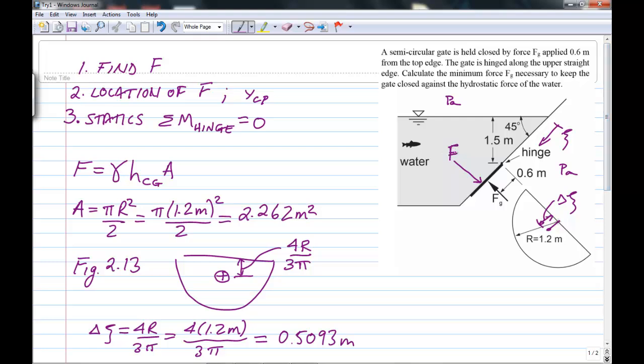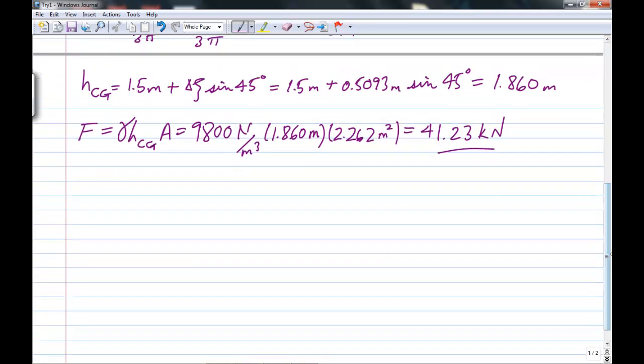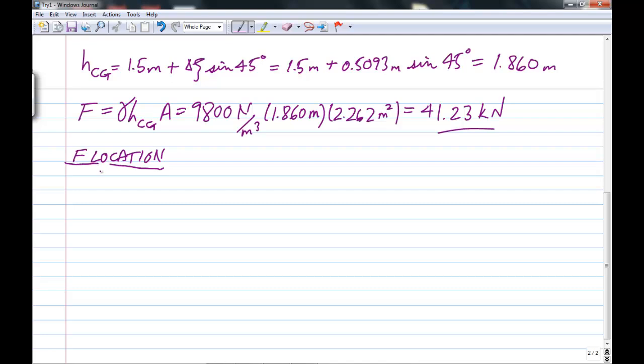That's this force F here. And now we need to find its location. So next, the location of F. And previously we derived that the center of pressure, so that's the place where the force acts, relative to the center of gravity, is minus the second moment of area about the centroid, sine theta, upon the height of the center of gravity of the gate, times area. And this negative sign here, is because this is the distance below the center of gravity. So below the center of the gate, that's why the negative sign there.